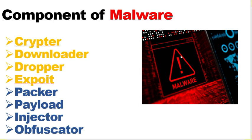The next component is the downloader. The downloader is a type of trojan that downloads other malware from the internet onto the target system. Downloaders are usually deployed when the attacker first gains access to the system. For example, a downloader can be used to retrieve another, more harmful piece of malware later.